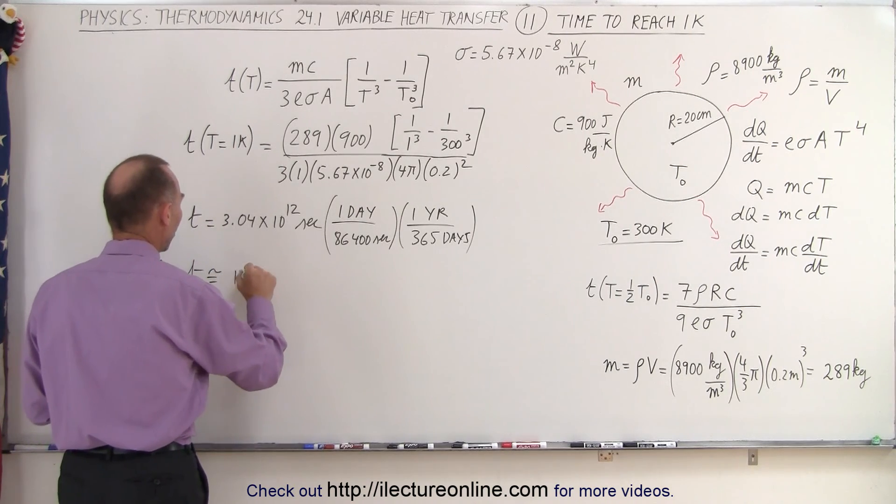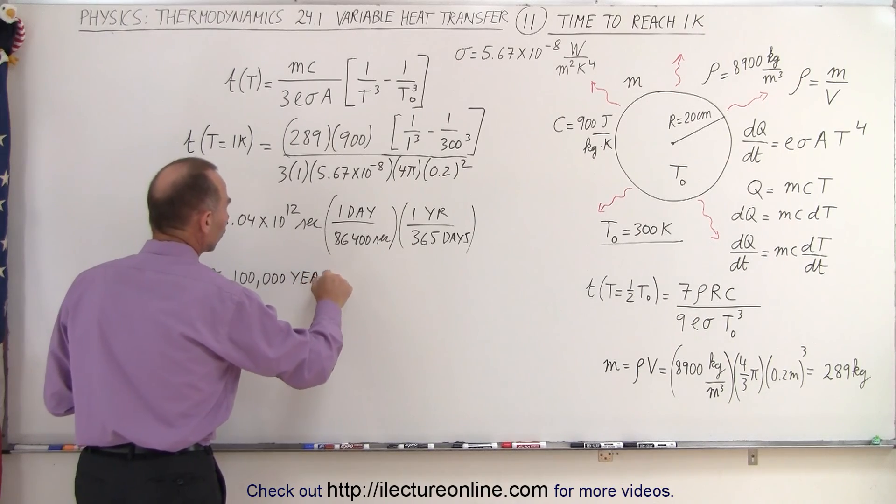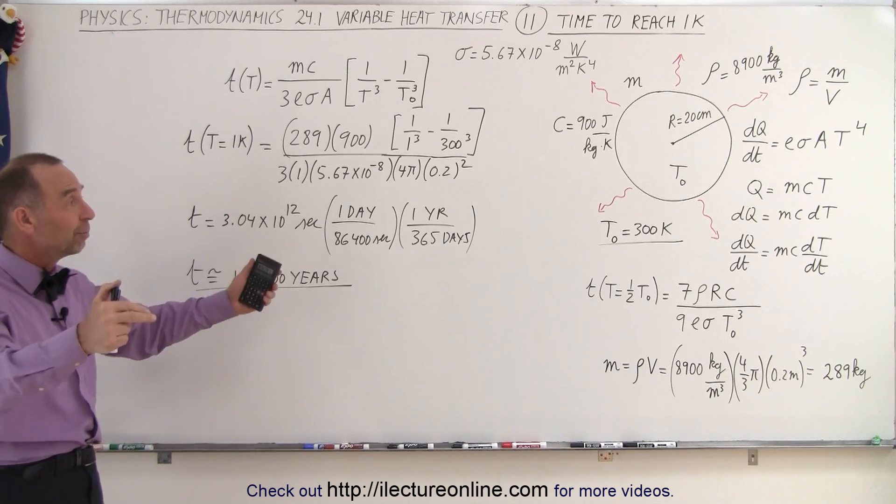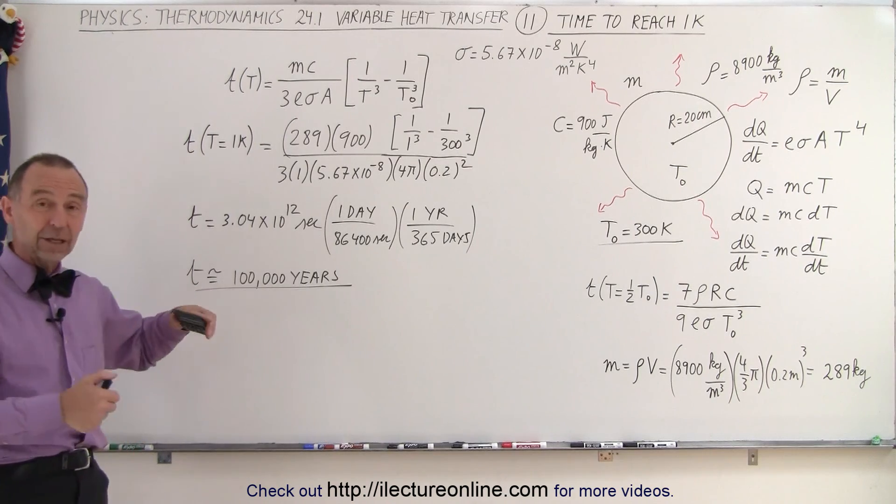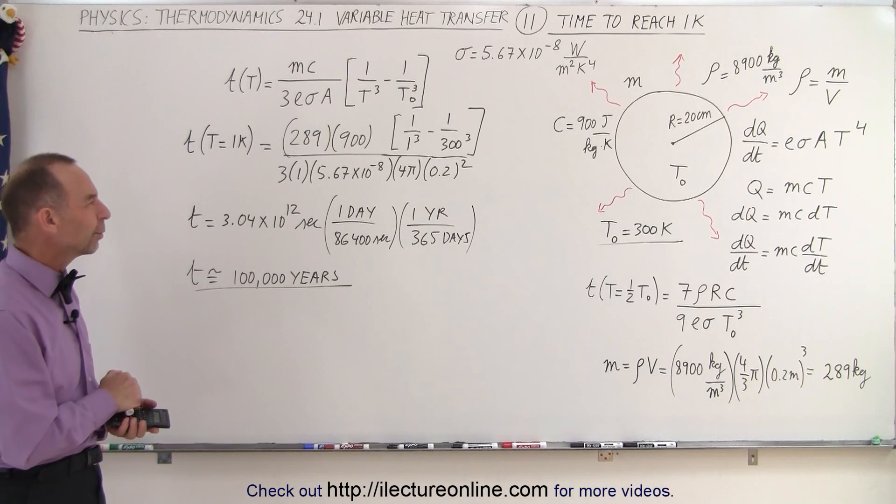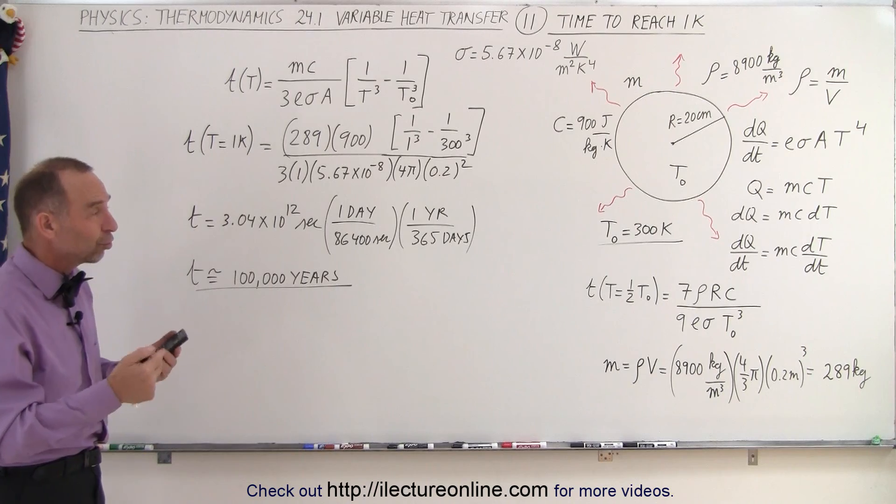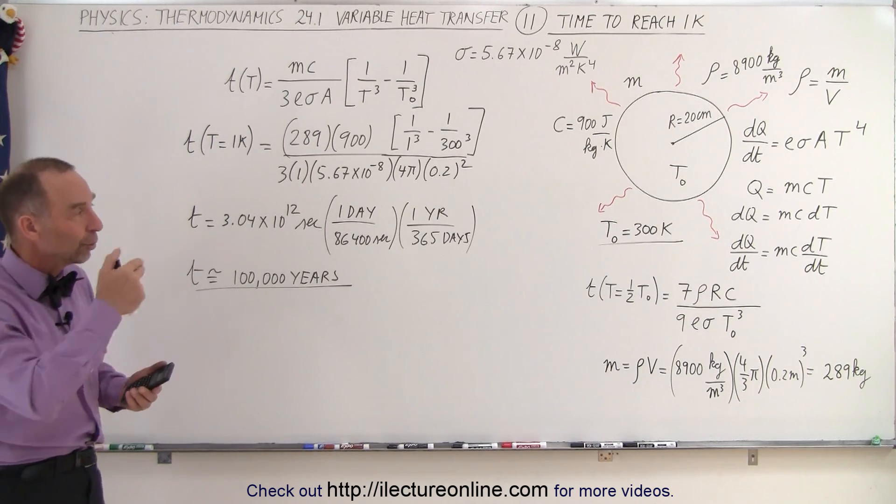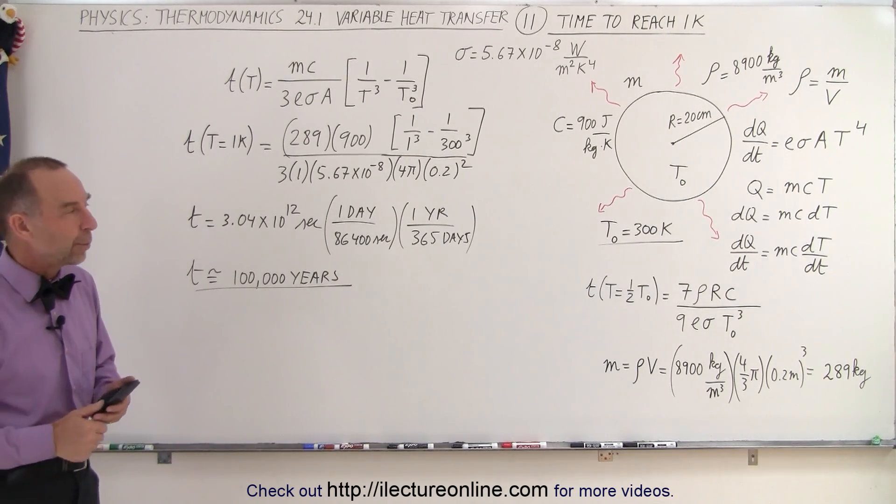So the time would be approximately 100,000 years to cool down to one degree kelvin. A sphere left in space starting at 300 kelvin would take an incredible amount of time to reach one kelvin—a hundred thousand years. That's quite remarkable, and of course the reason for that is the rate of emission becomes so small at the end. It takes such an enormous amount of time to let go of the last little bit of energy that's in there. The rate of radiation drops way down when it gets to be a very cold temperature.